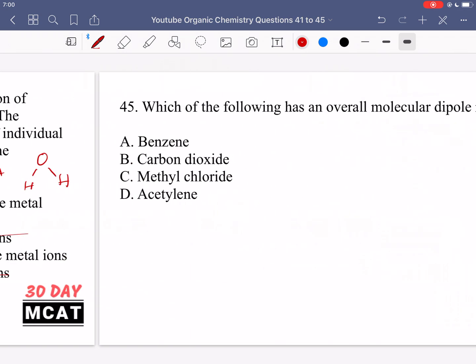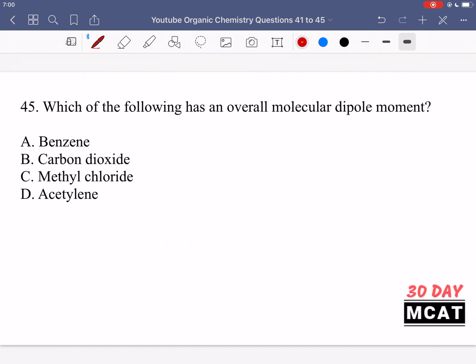In question 45, we're asked which of the following has an overall molecular dipole moment. To figure this out, you need to know if the molecule has any dipoles, and then think about its 3D structure to see if the dipoles cancel out or not. First we have benzene, which is just six carbons attached to each other with hydrogens. In benzene, we only have carbons and hydrogens, so we do not have any bonds with dipoles.